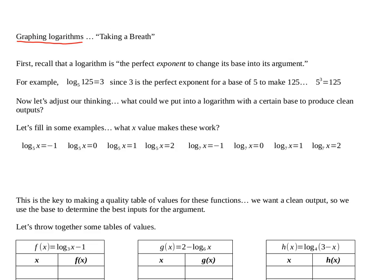When we first introduced what a logarithm is, we said it's the perfect exponent that will change the base into the argument. For example, log base 5 of 125 is 3, because the perfect exponent on a base of 5 to create 125 is 3. It's a new way of writing an exponential expression, but solving for the exponent.